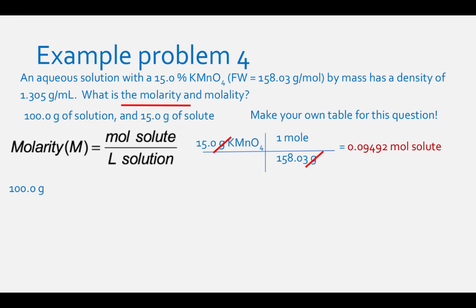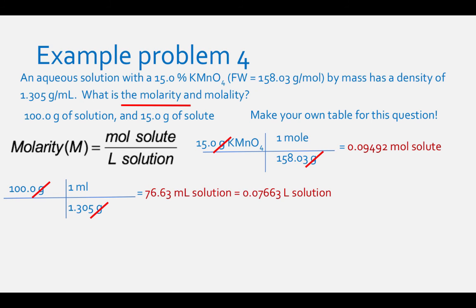To find liters of solution, divide grams of solution (100.0 g) by the density (1.305 g/mL), which equals 76.63 mL or 0.07663 L. Then divide moles of solute (0.09492 mol) by liters of solution (0.07663 L) for a molarity of 1.24 molar.